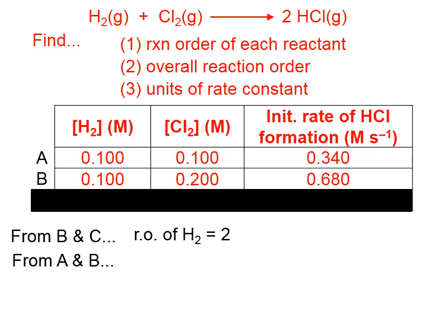Let's look at experimental setups A and B to figure out the reaction order for chlorine. To figure out the reaction order for chlorine, we want two experiments where the chlorine differs. The other reactant, in this case hydrogen, has to stay the same.